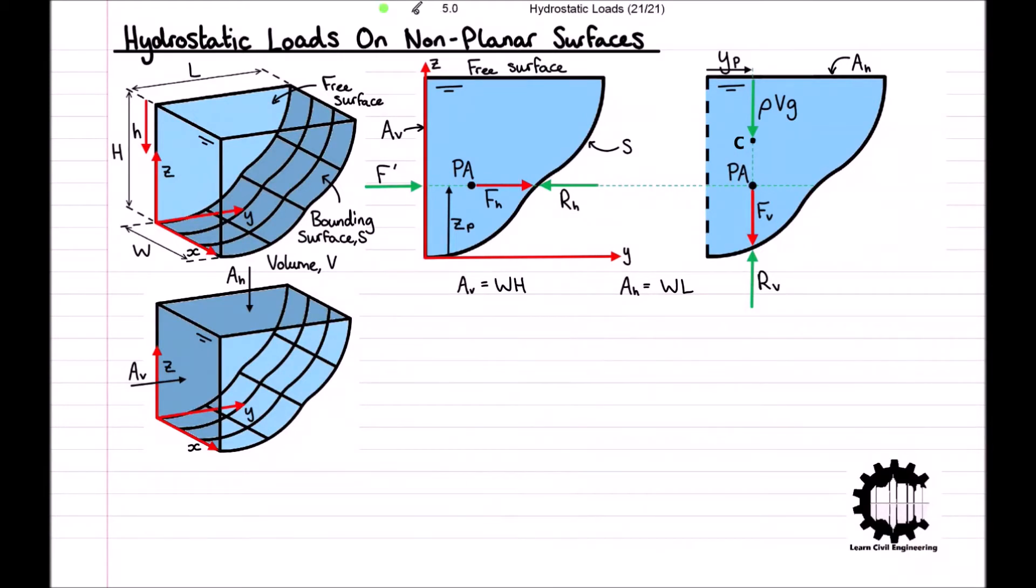Now looking at the diagram on the right, it shows how the vertical component of the hydrostatic load FV is calculated. The liquid is applying a vertical load of magnitude FV to the surface, and so the surface must be applying an equal and opposite reaction force RV to the liquid.